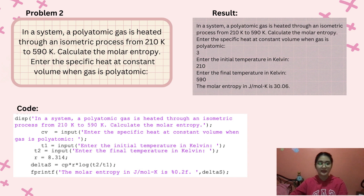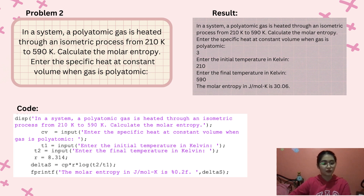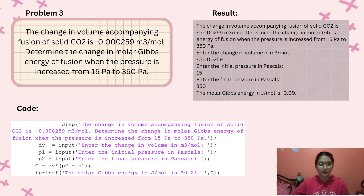For the second problem: in a system, a polyatomic gas is heated through an isometric process from 210 Kelvin to 590 Kelvin. Calculate the molar entropy. You enter the specific heat at constant volume for a polyatomic gas, which is 3; the initial temperature, 210 Kelvin; and the final temperature, 590 Kelvin. The molar entropy in joules per mol Kelvin is 30.06.